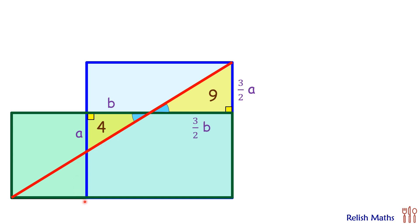Similarly, this angle is 90 degrees and these are vertically opposite angles. So this triangle and this triangle are also similar. So ratio of sides will be the same, a is to b. So let's say this side is k times a, then this side will be k times b.